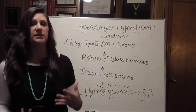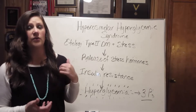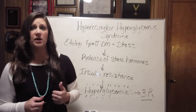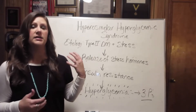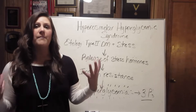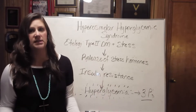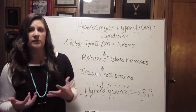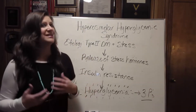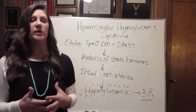Under conditions of stress, stress hormones are released. The big three players are our fight-or-flight hormones — epinephrine and norepinephrine — and also cortisol. Cortisol is released to fight inflammation in situations of stress. Cortisol, epi, and norepi all oppose insulin. If you have these stress hormones being released that oppose insulin, that is going to make blood glucose increase.